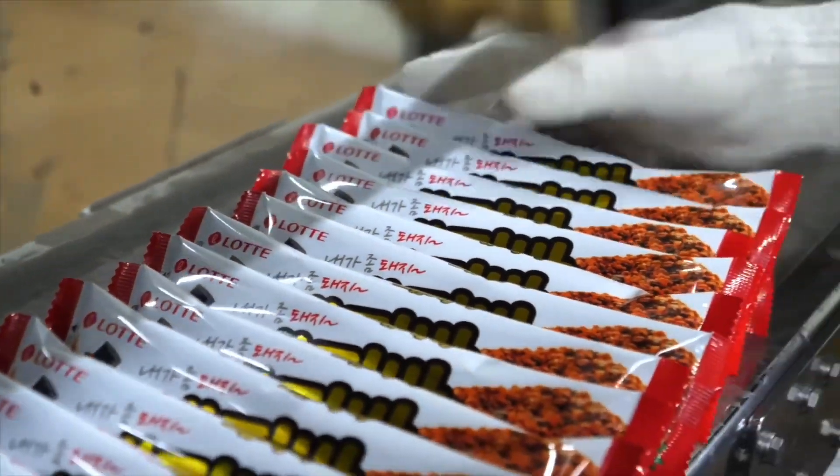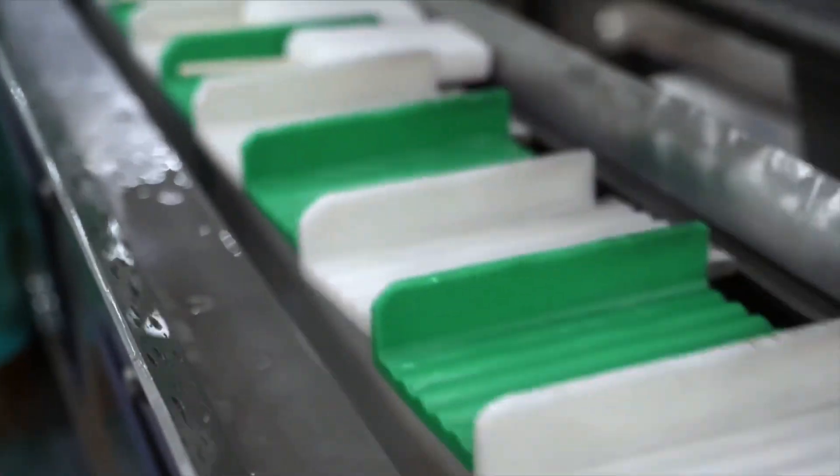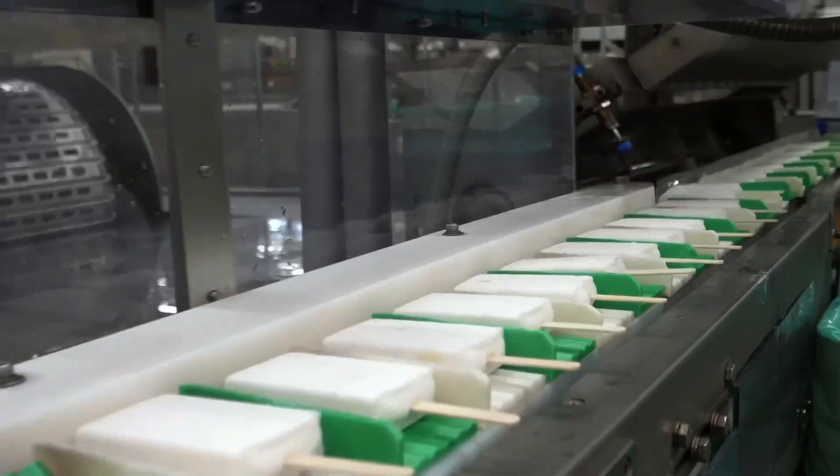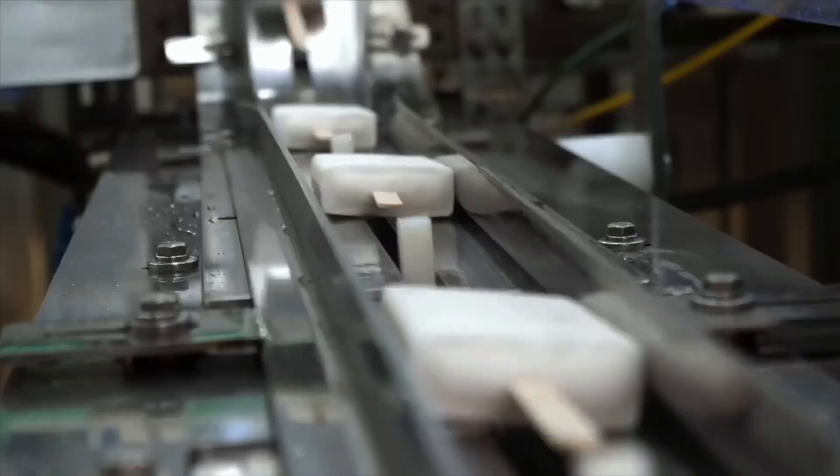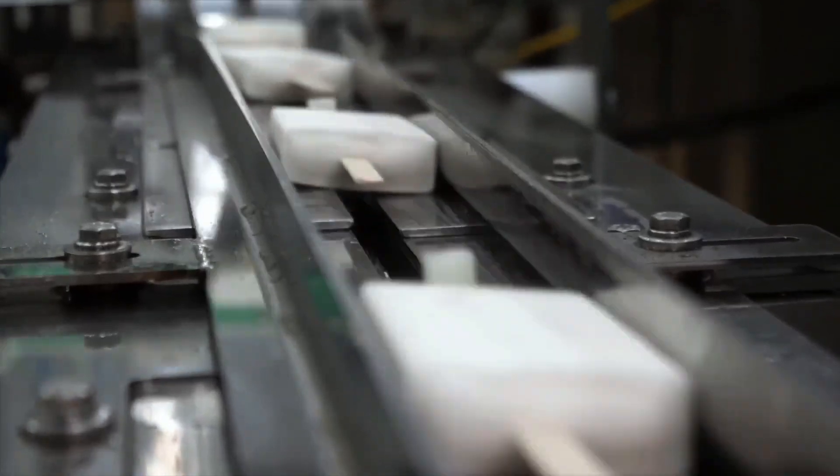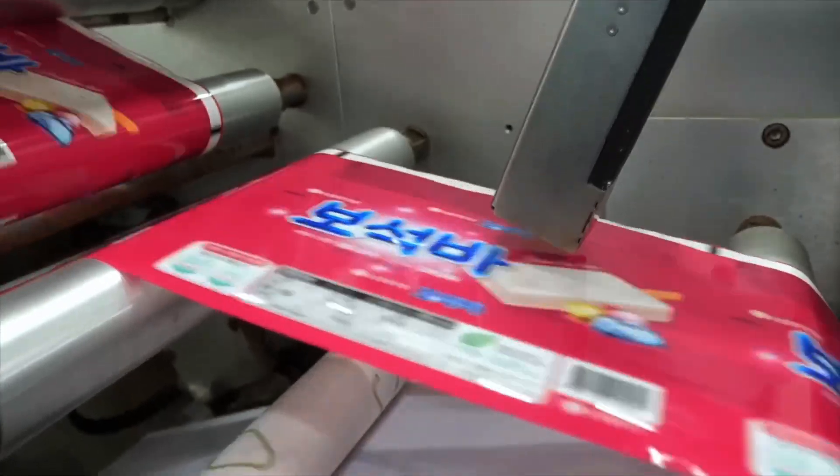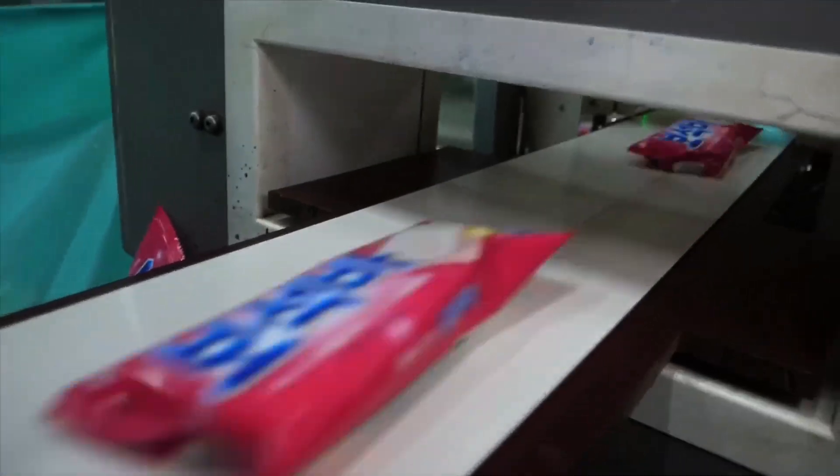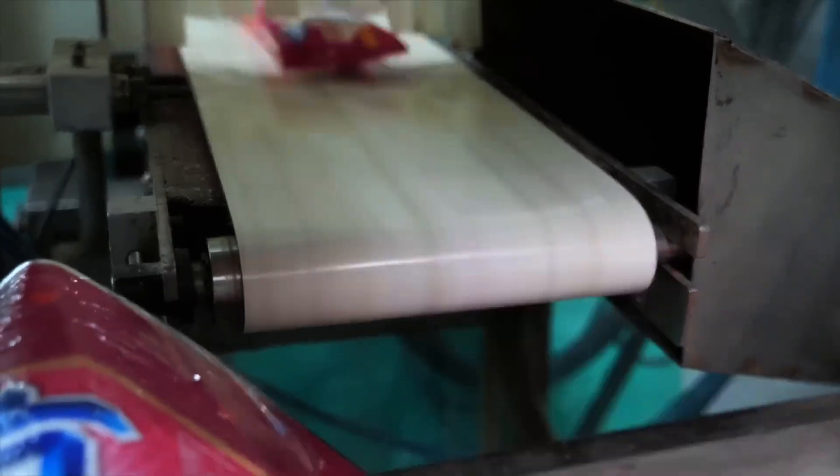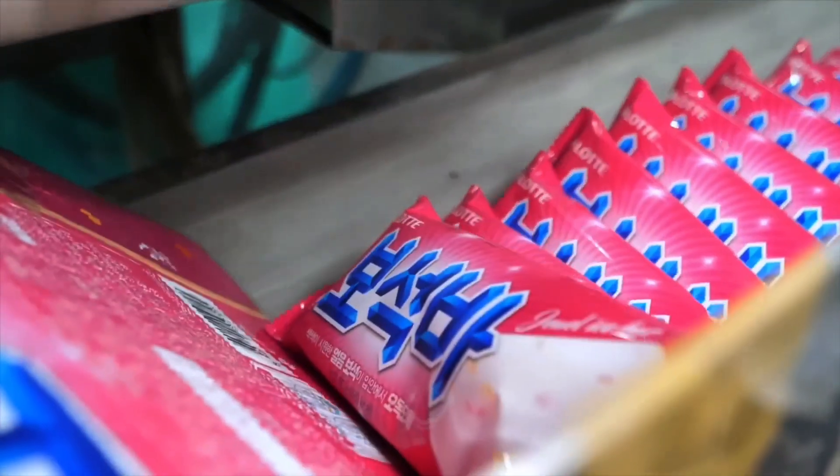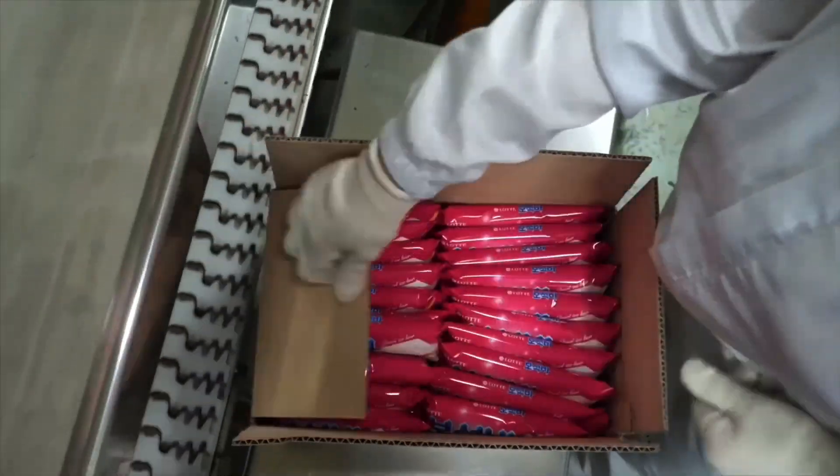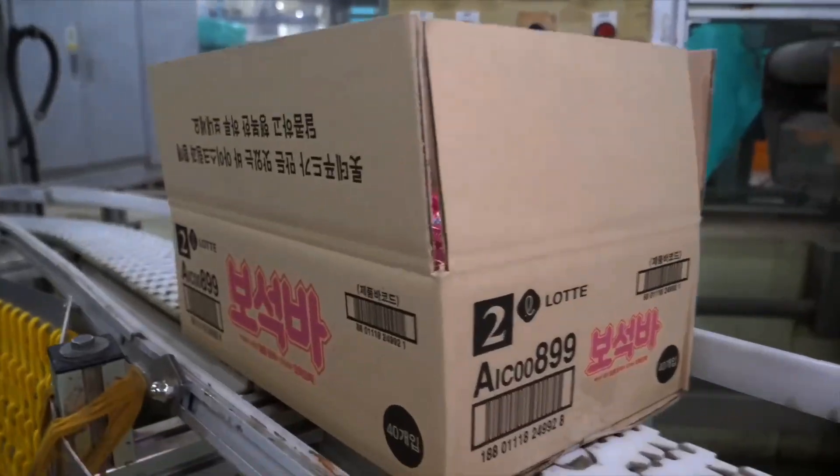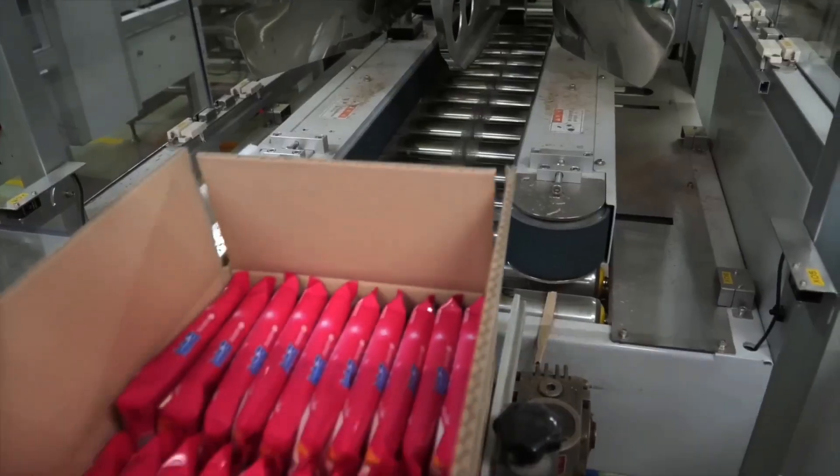Each packaging line is calibrated for a specific format. Cups, boxes, stick packs. The ice cream travels down conveyor belts, where it is automatically placed into individual wrappers or containers. High-speed machines work at a pace of up to 200 packs per minute. Cameras and sensors monitor every detail. Wrapper alignment, barcode presence, seal integrity. Even a microscopic defect can halt the line.